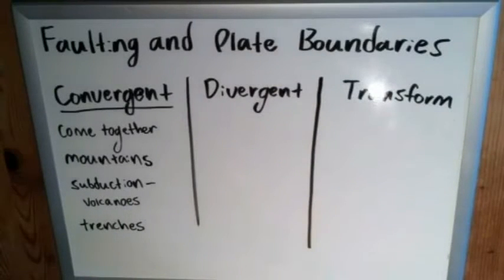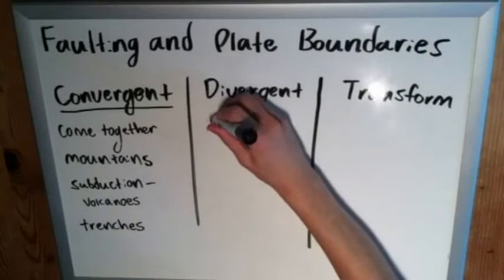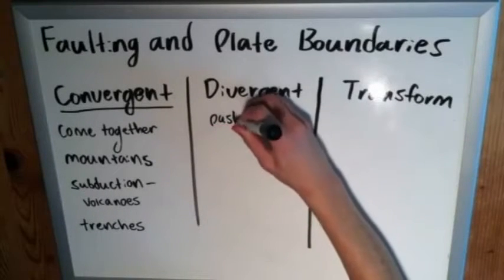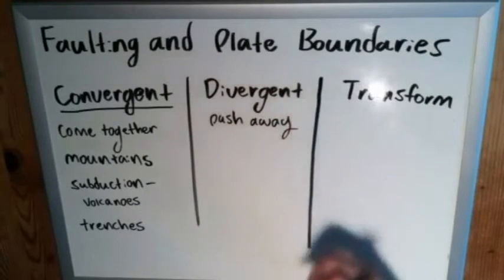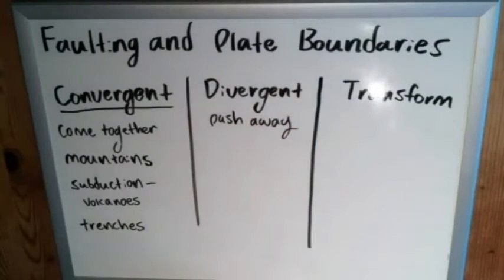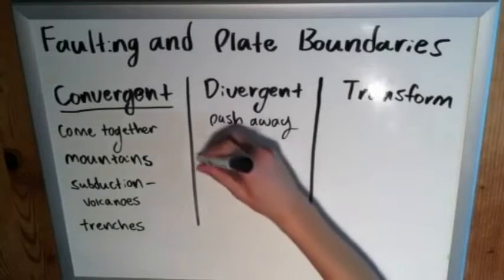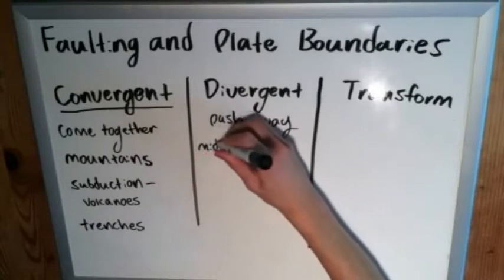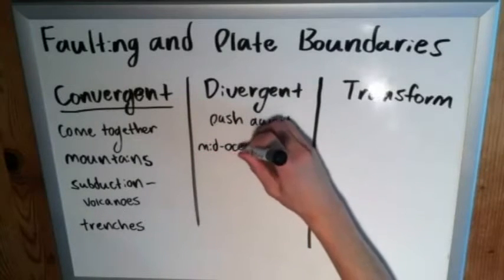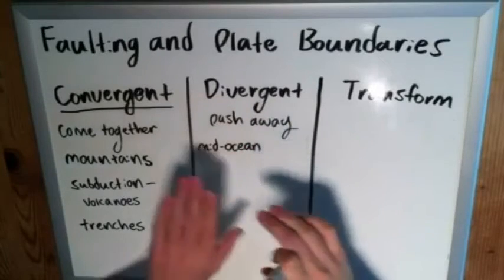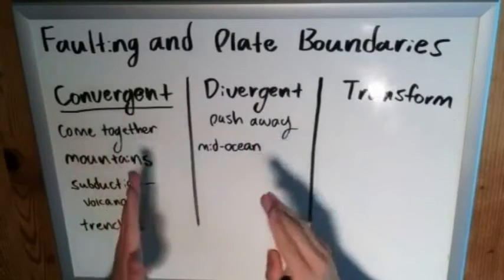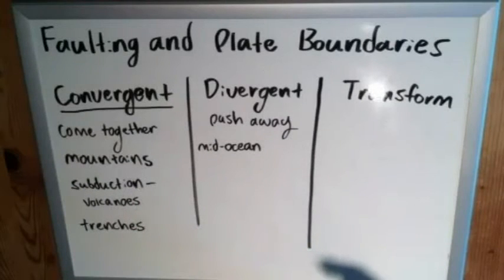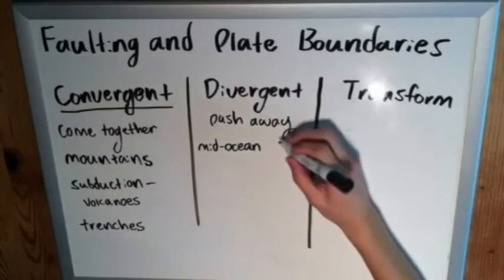Divergent, as the name implies, is pretty simple. The plates push or are pulled away from each other — either way, they're being separated. These are most famous for mid-ocean ridges where seafloor spreading occurs: pieces of the ocean floor pull apart and new magma comes in and fills the gap.